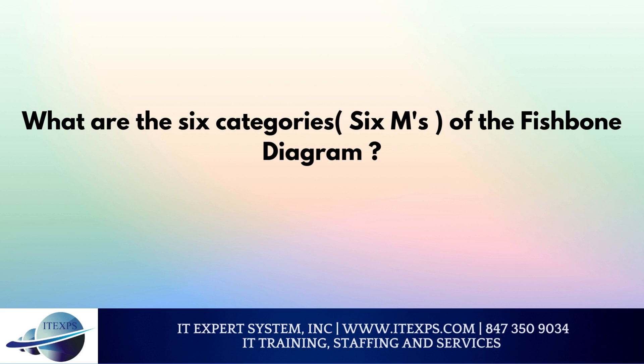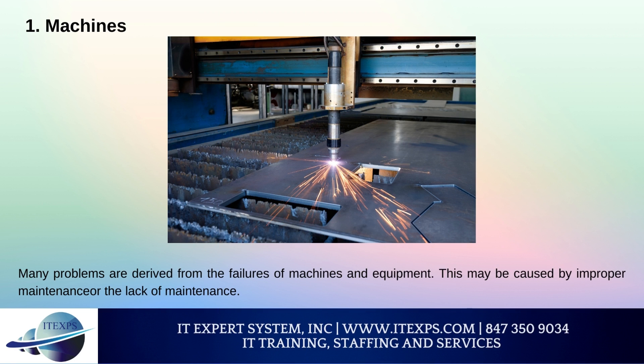What are the 6 categories of the Fishbone Diagram? 1. Machines: Many problems are derived from the failures of machines and equipment. This may be caused by improper maintenance or the lack of maintenance. Considering this, it is always important to supervise the operation of all equipment, so the operation is close to perfection, avoiding damages.